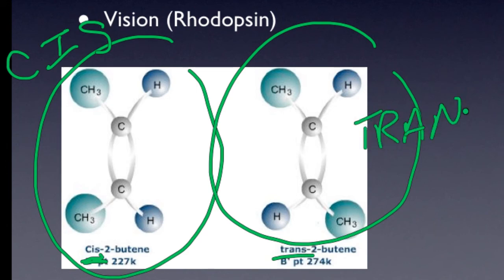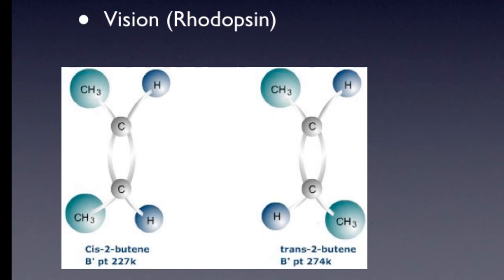The way I remember this is cis are sisters - they're right next to each other. Interesting case, vision. Our vision depends on rhodopsin. Rhodopsin only works if it switches back and forth between its cis form and its trans form. The switching between the cis and the trans form is the reason that we are able to see. A simple little change like rotating around that double bond enables us to have vision. Kind of cool.